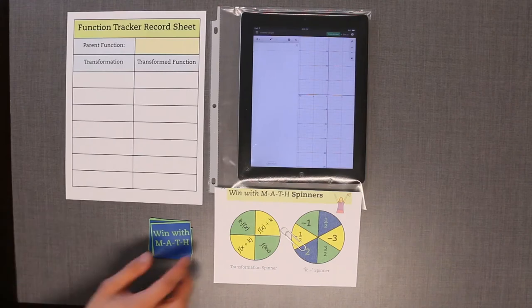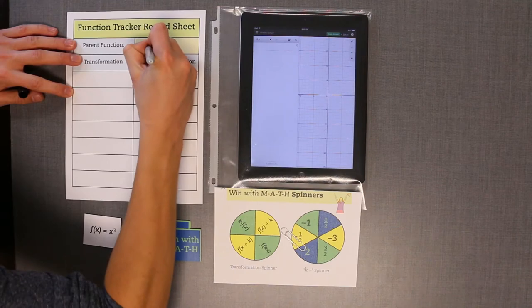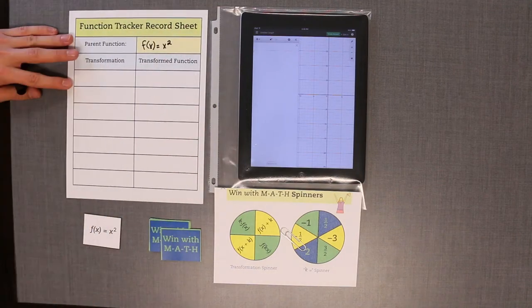To begin, choose a player to be the function selector. The function selector flips over the top Win with Math card and writes the function in the yellow cell of the function tracking sheet.